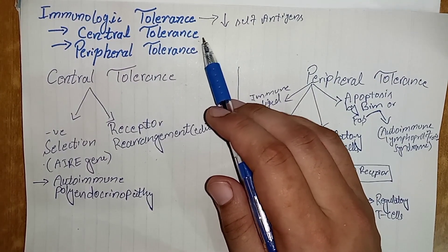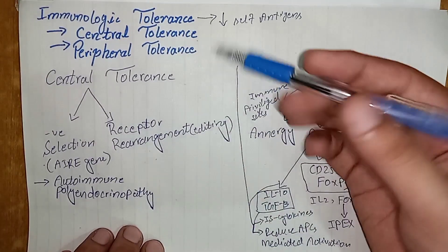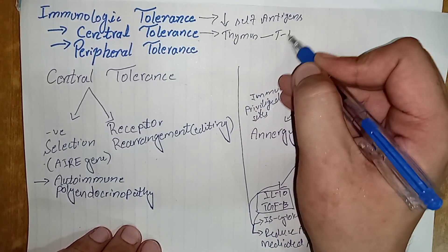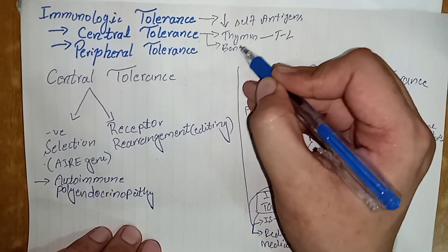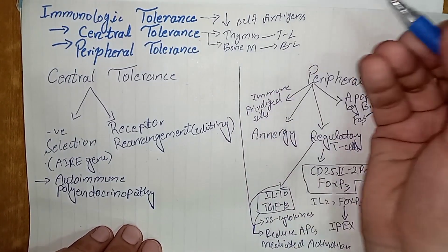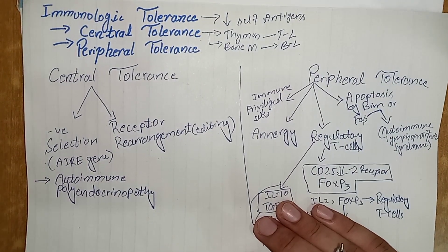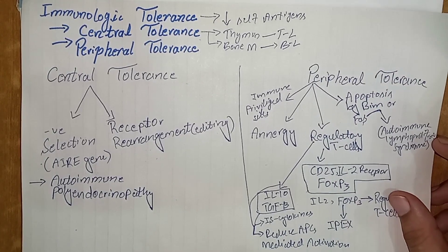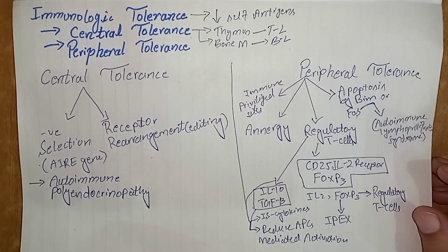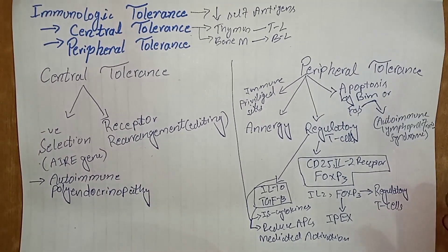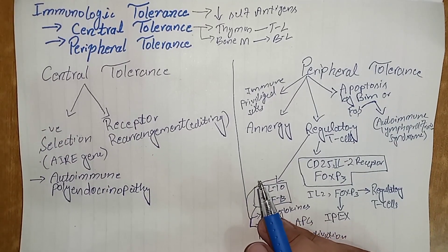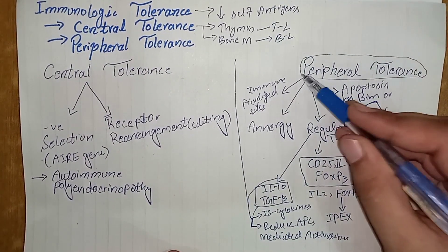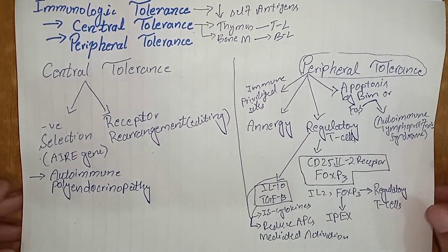Central tolerance is the tolerance which develops during the development and maturation of lymphocytes in their primary lymphoid organs. For T lymphocytes, the primary lymphoid organ is the thymus, and bone marrow is the primary lymphoid organ for B lymphocytes. When T and B lymphocytes are developing, all progenitors that react with self-antigens are detected and deleted — this is central tolerance. However, central tolerance is not always perfect, and certain autoreactive lymphocytes may form and are subjected to peripheral tolerance.